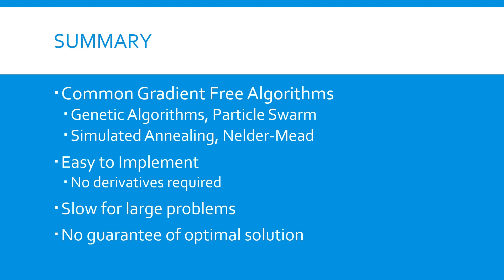On the downside, gradient-free algorithms tend to be very slow for large problems. Many of the algorithms are also stochastic, meaning that they are based on chance and will not always find the same solution. Finally, there is no guarantee that these algorithms will return an optimal solution, meaning that while the solution found might be better than what you started with, you won't know if it's the best solution possible.